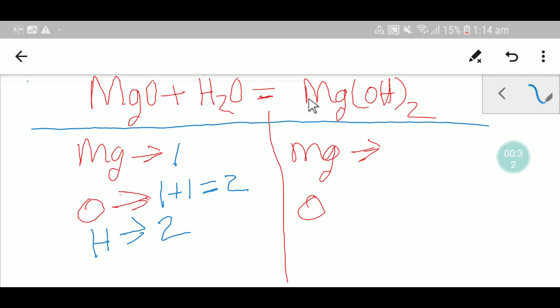In the right hand side or product side we have here one magnesium and these two applicable for these two in the parenthesis. So we have here two oxygen and here we have two hydrogen.